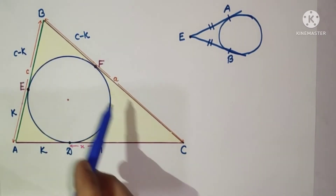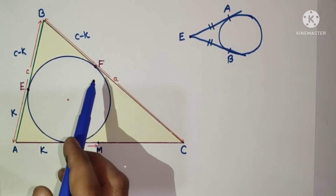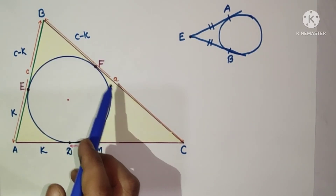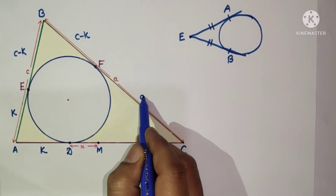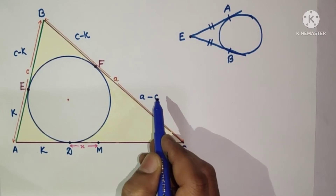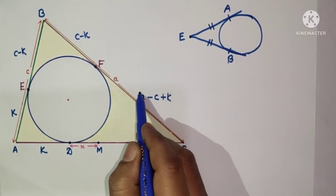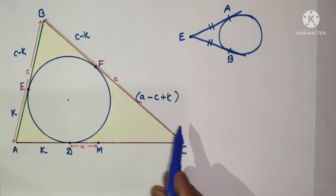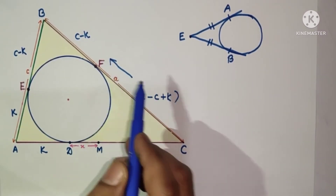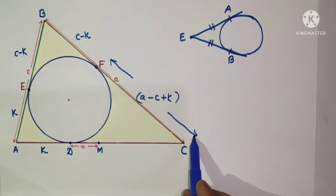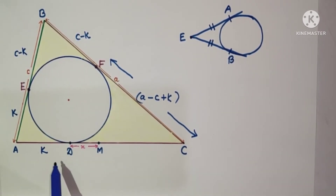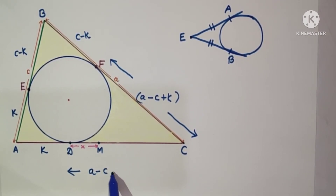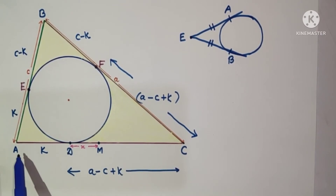Since BC equals a and BF equals c minus K, we can find FC by subtracting: FC equals a minus (c minus K), which gives a minus c plus K. Now, CF equals CD by the tangent equality property, so CD is also equal to a minus c plus K.